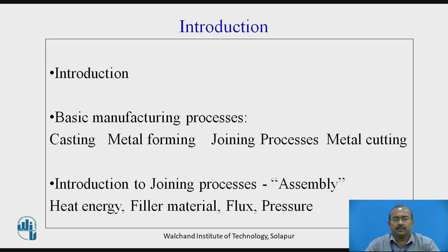Joining processes involves various parameters like heat energy, filler material, flux, and pressure. All these four parameters may be used simultaneously, or only a few of them are used as per the type of welding or joining process.